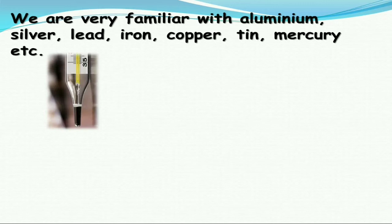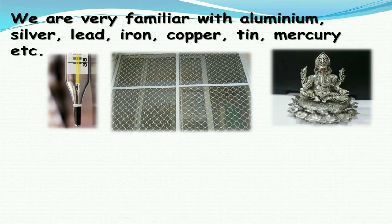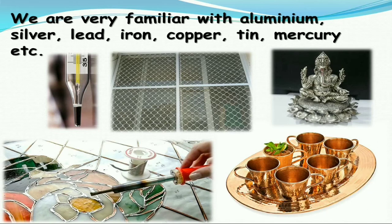Mercury is used in thermometers. Aluminium is used as a metal mesh or protection for windows. Silver metal is used in the making of idols, and lead is used in decoration and soldering. Copper is used in our daily life.